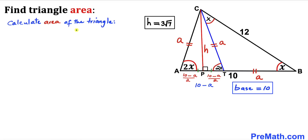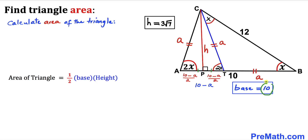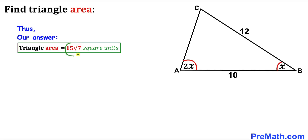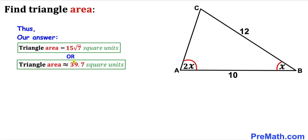For the final step, the area of triangle ABC equals half times base times height. Our base is 10 and height H is 3√7, so area = (1/2) × 10 × 3√7 = 15√7 square units, which is approximately 39.7 square units. Thanks for watching and please don't forget to subscribe to my channel for more exciting videos.